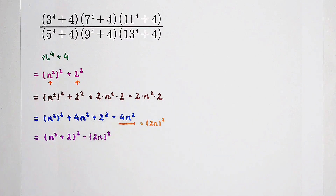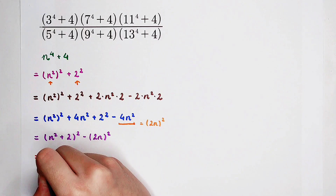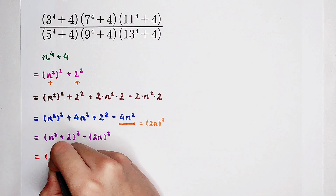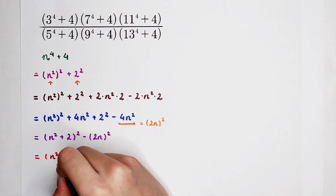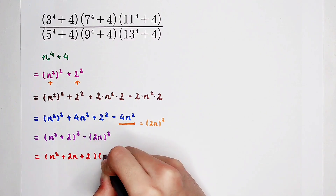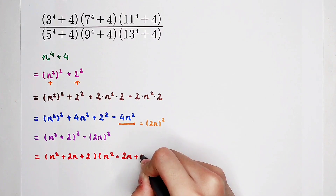So then, use the formula: a squared minus b squared equals a plus b times a minus b. The addition of these two terms gives us: n squared plus 2n plus 2, times n squared minus 2n plus 2.